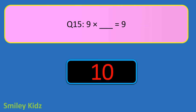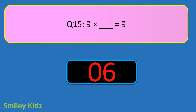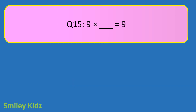Question number 15. 9 times blank is equal to 9. Your time starts now. And your time is up. The right answer is 1. 9 times 1 is equal to 9.